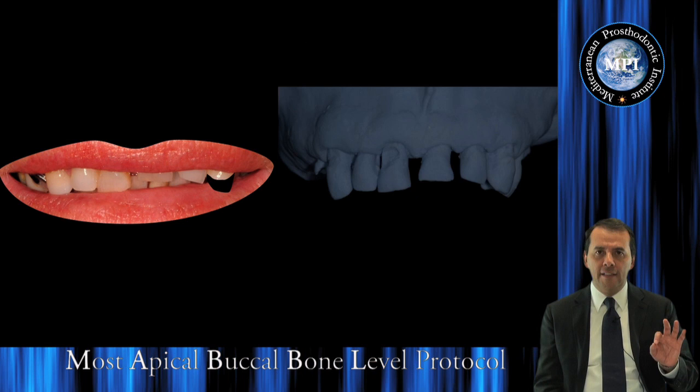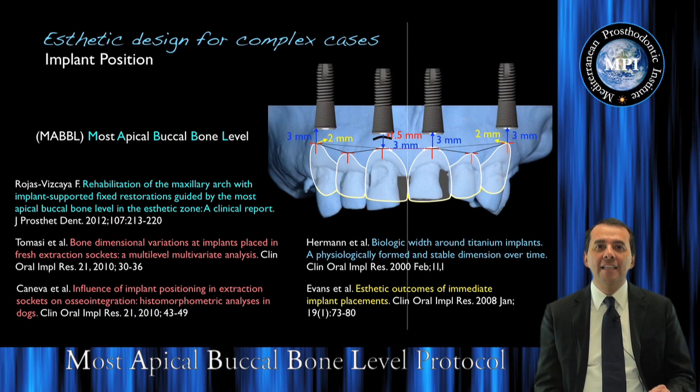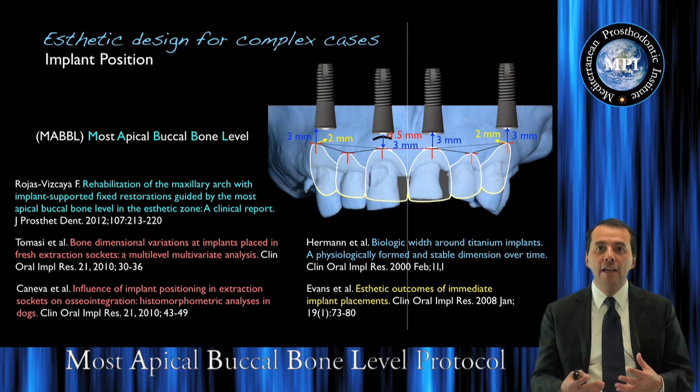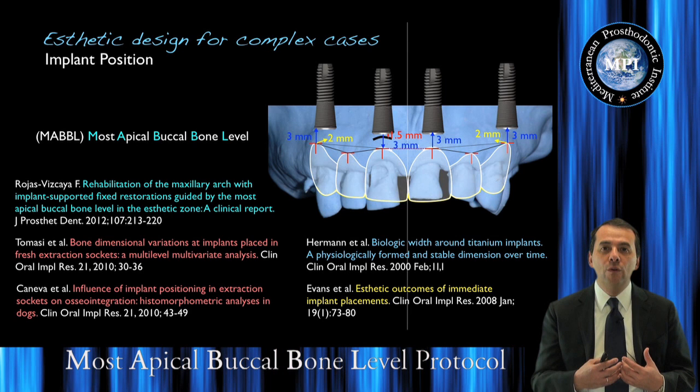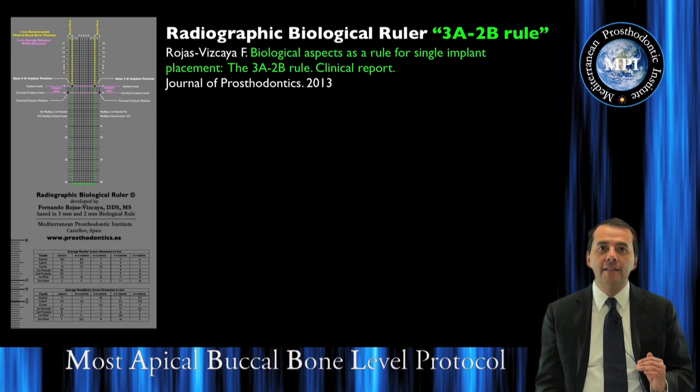We will see how, in a step-by-step format, we can create the new position of the incisal edge, the new tip of the canine, and we will describe this protocol in detail. What is the most epical vocal bone level protocol? It is a protocol that I designed to use in very complex cases with terminal dentition — how we can design all the aesthetic area, the pink and the white aesthetic.